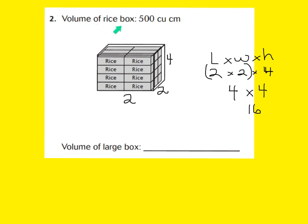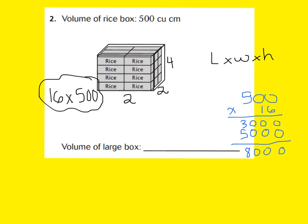Now let's go back to what we know. The volume of one of those boxes is 500 cubic centimeters. So my equation is 16 boxes times 500 cubic centimeters — this will give me the volume of the large box. Go ahead and pause your video and solve 500 times 16 on your own, and we'll check together. When I multiplied 500 times 16, you should have gotten 8,000. We are talking about cubic centimeters, so your volume would be 8,000 cubic centimeters.